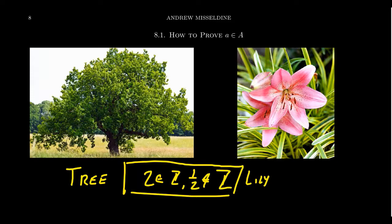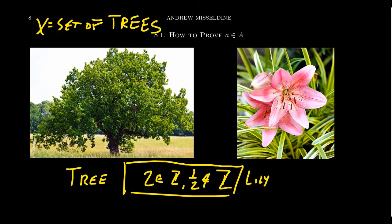If you're given a definition, we can define the set of objects that satisfy that definition. For example, there is a biological definition of what a tree is, and so we can use that definition to define a set. Once the set's defined, anything that satisfies the definition belongs to the set. Conversely, given any set, we can make a definition to mean all the things that belong to that set. Checking membership of a set is really just checking a definition.